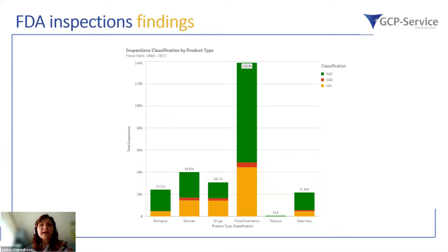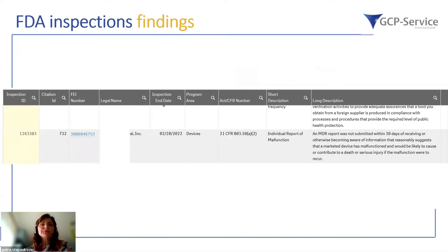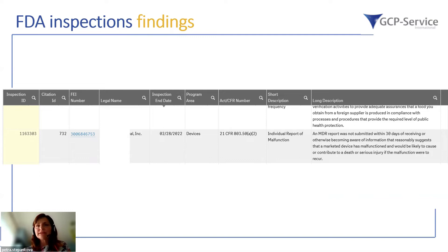In terms of product type, the majority of FDA inspections were performed for food and cosmetics. However, we are mostly interested in biologics, devices, or drugs. You can also filter based on company name. The overview shown here has been blinded, but on the FDA pages you can find each individual report, including a description of what the finding was and how it was addressed to the audit team.